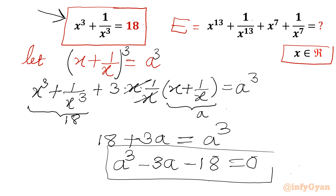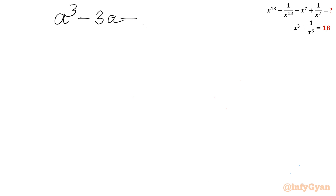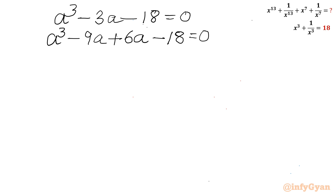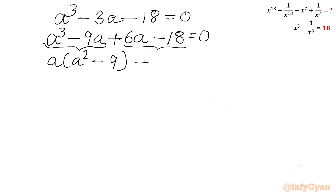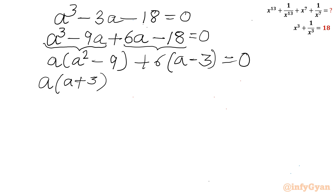This is a cubic equation and I will use the method of factorization. Let me write a cube minus 3a minus 18 equal to 0. I will split minus 3a as minus 9a plus 6a, giving: a cube minus 9a plus 6a minus 18 equal to 0. Taking a common from the first two terms gives a in bracket a square minus 9, and 6 is common from the last two terms, giving 6 in bracket a minus 3, equal to 0.